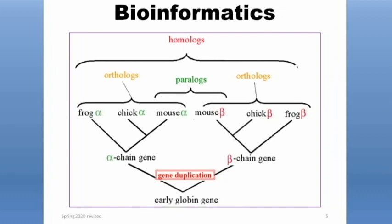Orthologs are the same gene found in different organisms. Looking at the figure, you can see alpha globin of a frog, alpha globin of a chick, and alpha globin of a mouse are considered orthologs. Whereas mouse alpha globin and mouse beta globin are paralogs — alpha globin and beta globin are actually gene duplications of each other, duplicated genes with different functions inside the same organism.